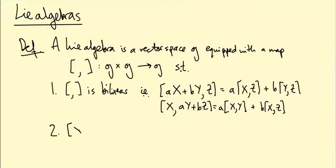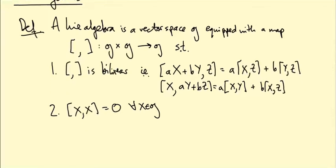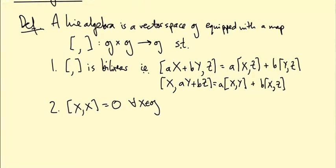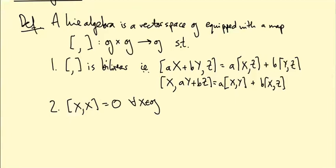Second, for all x in the Lie algebra, we want x bracket x equals zero. That makes sense if you think about matrix commutator bracket, because x, x minus x, x is always zero. So that's what this is abstracting.